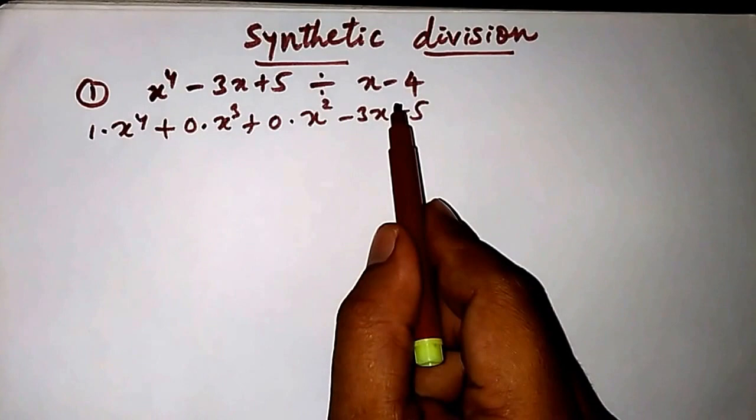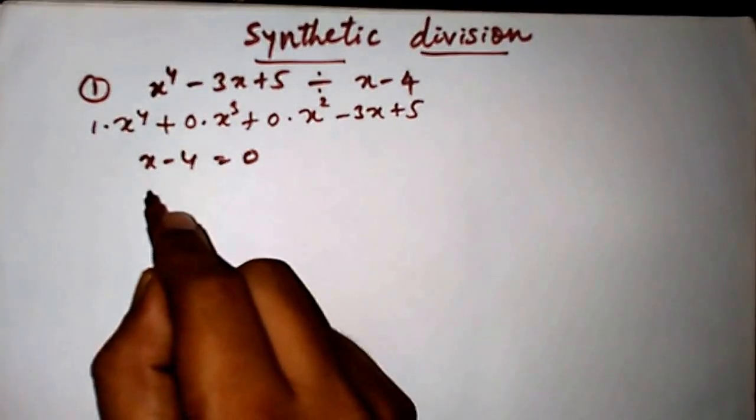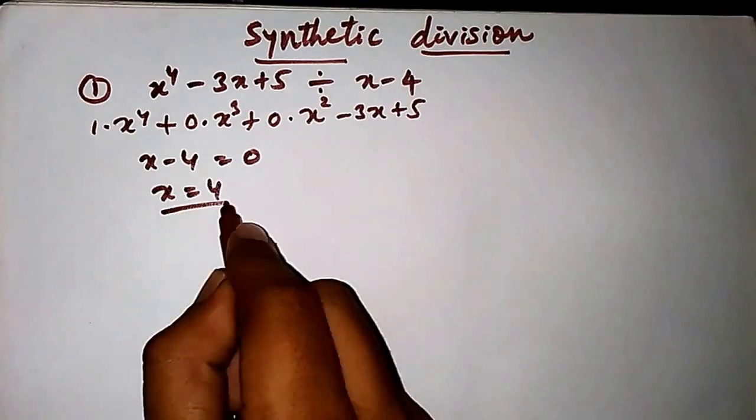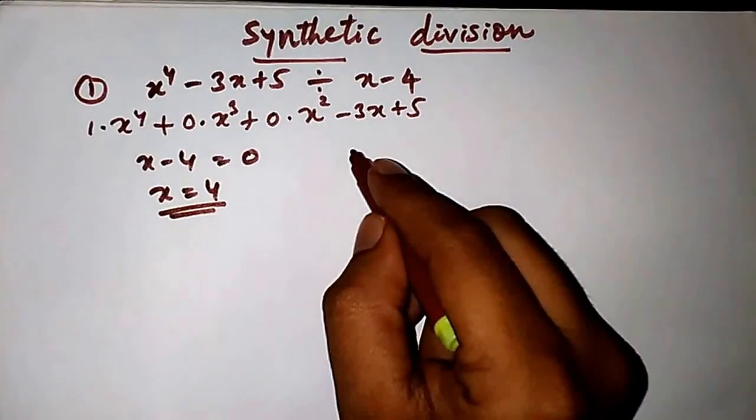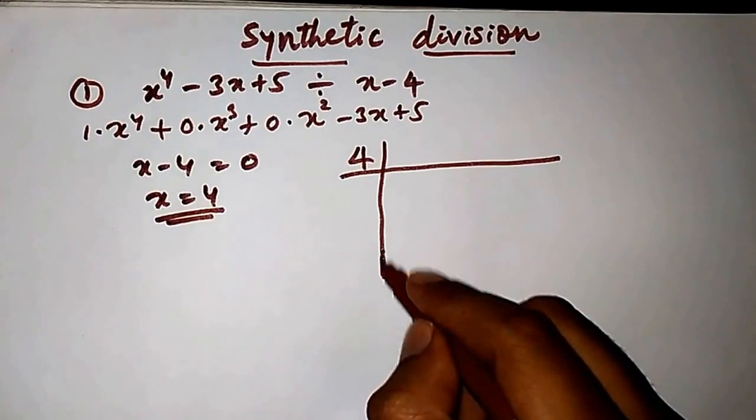The next step is take the divisor x minus 4 and equate it to 0. Therefore x equals 4 is our multiplier. Now take down this 4 here and start synthetic division.